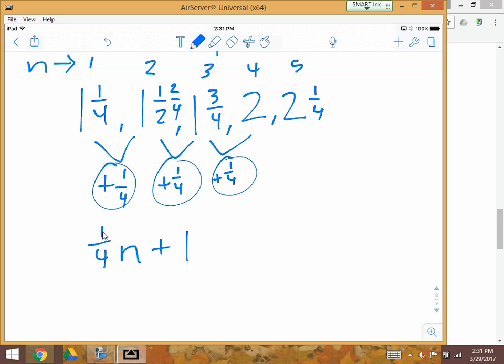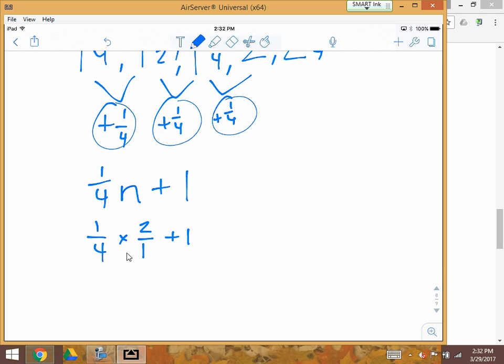So now the 2 changes to 1, the 4 changes to 2, right? If I simplify before I multiply, I'm going to end with 1 times 1 is 1, 2 times 1 is 2, plus 1 equals 1 1/2.